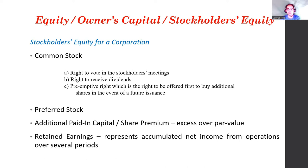When the company earns more profit, common stockholders benefit more from their stocks compared to preferred stockholders. Additional paid-in capital is the excess over par value — for example, if the par value to invest is 100 but you paid 150, the 50 is the additional paid-in capital. Retained earnings represent accumulated net income from operations over several periods. All earnings accumulated that have not been declared as dividends by the board of directors remain as retained earnings and can be used for the company's expansion.